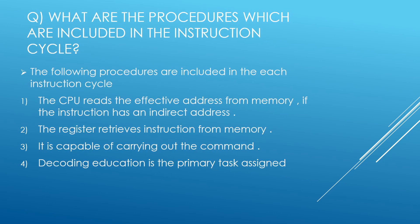What are the procedures included in the instruction cycle? The instruction cycle is an important process in computer systems that consists of several steps to execute an instruction. It starts with the CPU reading the effective address from memory if the instruction has an indirect address. Then the CPU retrieves the instruction from memory and decodes it. After decoding, the CPU carries out the command. These steps are repeated for each instruction, ensuring that the computer system functions correctly and efficiently.